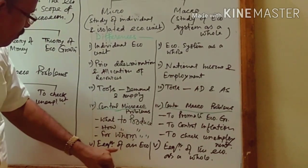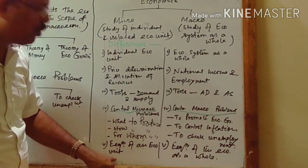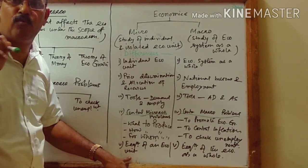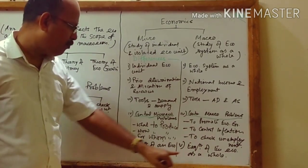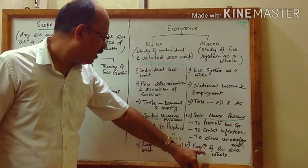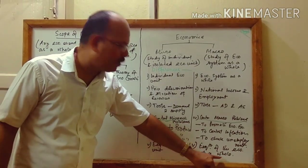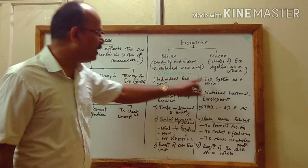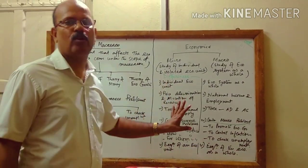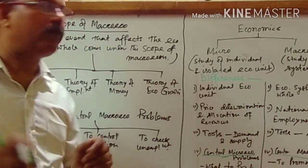Finally, the last point of difference is equilibrium of an economic unit. Microeconomics deals with the equilibrium of one individual economic unit, while macroeconomics deals with the equilibrium of the economy as a whole. So these are the differences between microeconomics and macroeconomics.